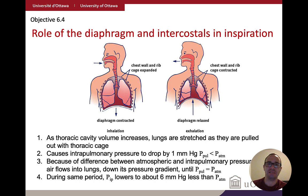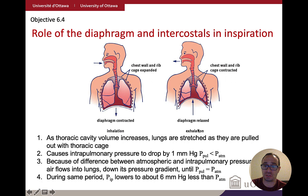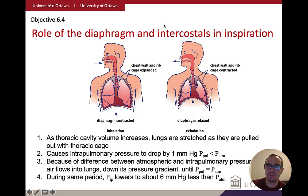When exhaling, the rib muscles relax so the chest cavity collapses inward, and the diaphragm relaxes and pushes upward. This results in a smaller volume, which increases pressure. When pressure increases relative to the atmosphere, air moves out. It's these changes in the ribs and diaphragm that control airflow in and out of the thoracic cavity.